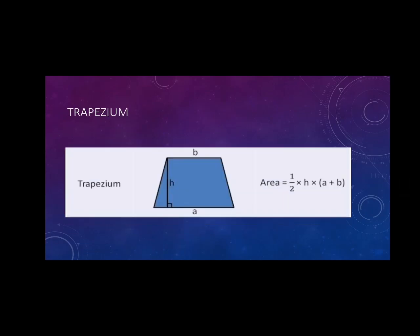And the next one is trapezium. The trapezium is sum of two parallel sides are given. Suppose A and B are the parallel side. And H is the height. Therefore, area is half into sum of parallel side into the height. That is half into A plus B into H.